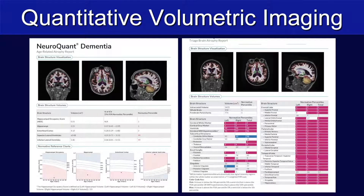This is an example of what a quantitative volumetric dementia report looks like. We're given the volumes of different pertinent substructures in the brain, as well as their normative percentile, so we can see what is statistically significant for patient age. That's displayed on a pictorial graph. The second page of the report gives us additional structures throughout the brain that can help us differentiate between different types of neurodementia.